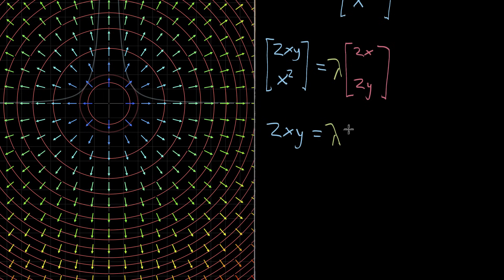And then the second equation is that x squared is equal to lambda times 2y.